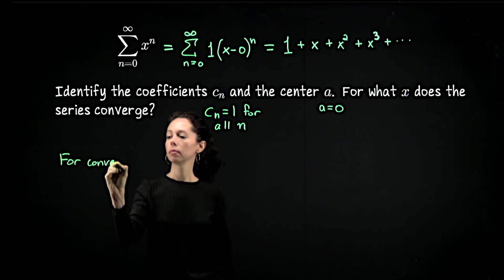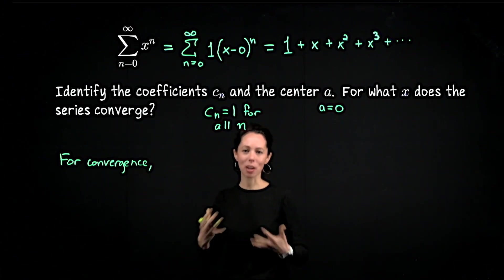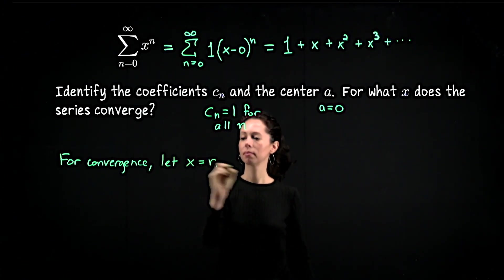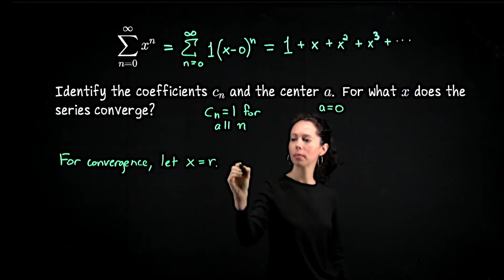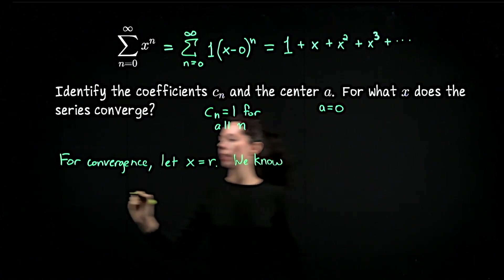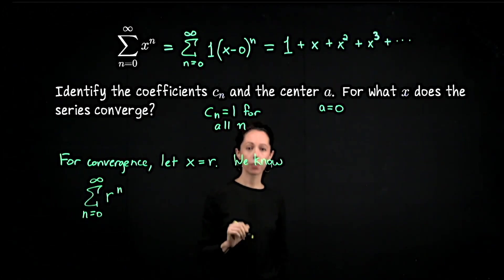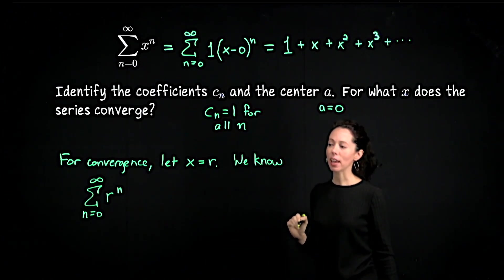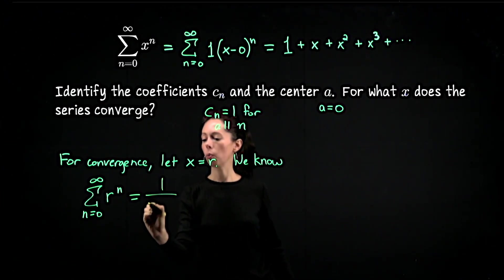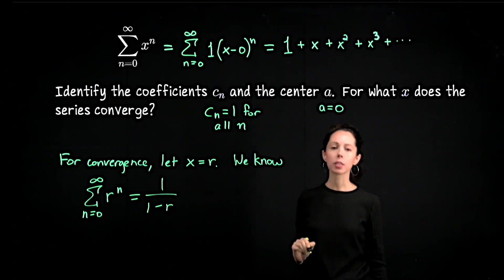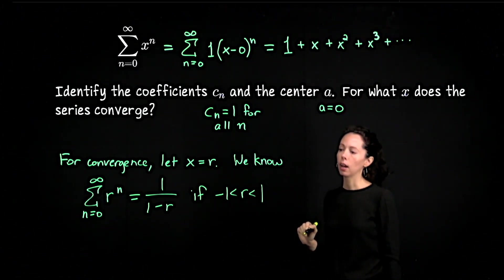So for convergence, consider letting x equal r, where r we think of as a number. This is really just going to be a letter change, but I want to make it look like a geometric series. We know that the series that looks like r to the n from n equals 0 to infinity converges. And not only converges, but I can actually tell you what it converges to. That's something very special about geometric series. This adds up to the number 1 over (1 - r), if that number r is between negative 1 and 1, otherwise it diverges.